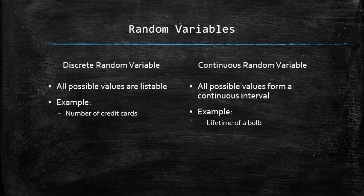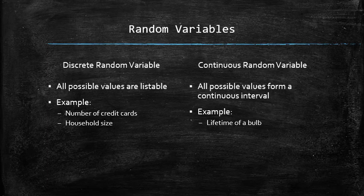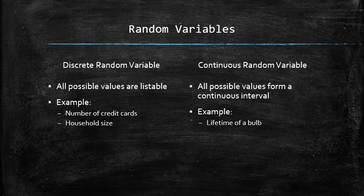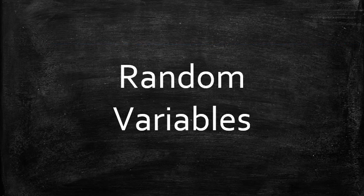Do you think the size of a randomly selected household is discrete or continuous? The correct answer is discrete, because the possible values are 1, 2, 3, 4, and so on. Do you think the monthly income of a randomly selected household is discrete or continuous? The correct answer is continuous, because it can be any number greater than 0. Now that we introduced the concept of a random variable, we will focus on the properties and applications of discrete and continuous random variables in this exact order.